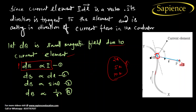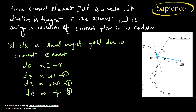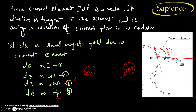If you increase the current element length dl, the magnetic field will also increase. One more important thing: db is proportional to sinθ, where θ is the angle between the current element and the position vector r. If the angle increases, the magnitude of the field also increases. Also, db is inversely proportional to the square of the distance r².